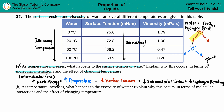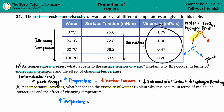Now for part B: as temperature increases, what happens to the viscosity of water? Looking at the chart, going from top to bottom: 1.79 down to 0.28 — viscosity is also decreasing. So we have decreasing surface tension and also decreasing viscosity.